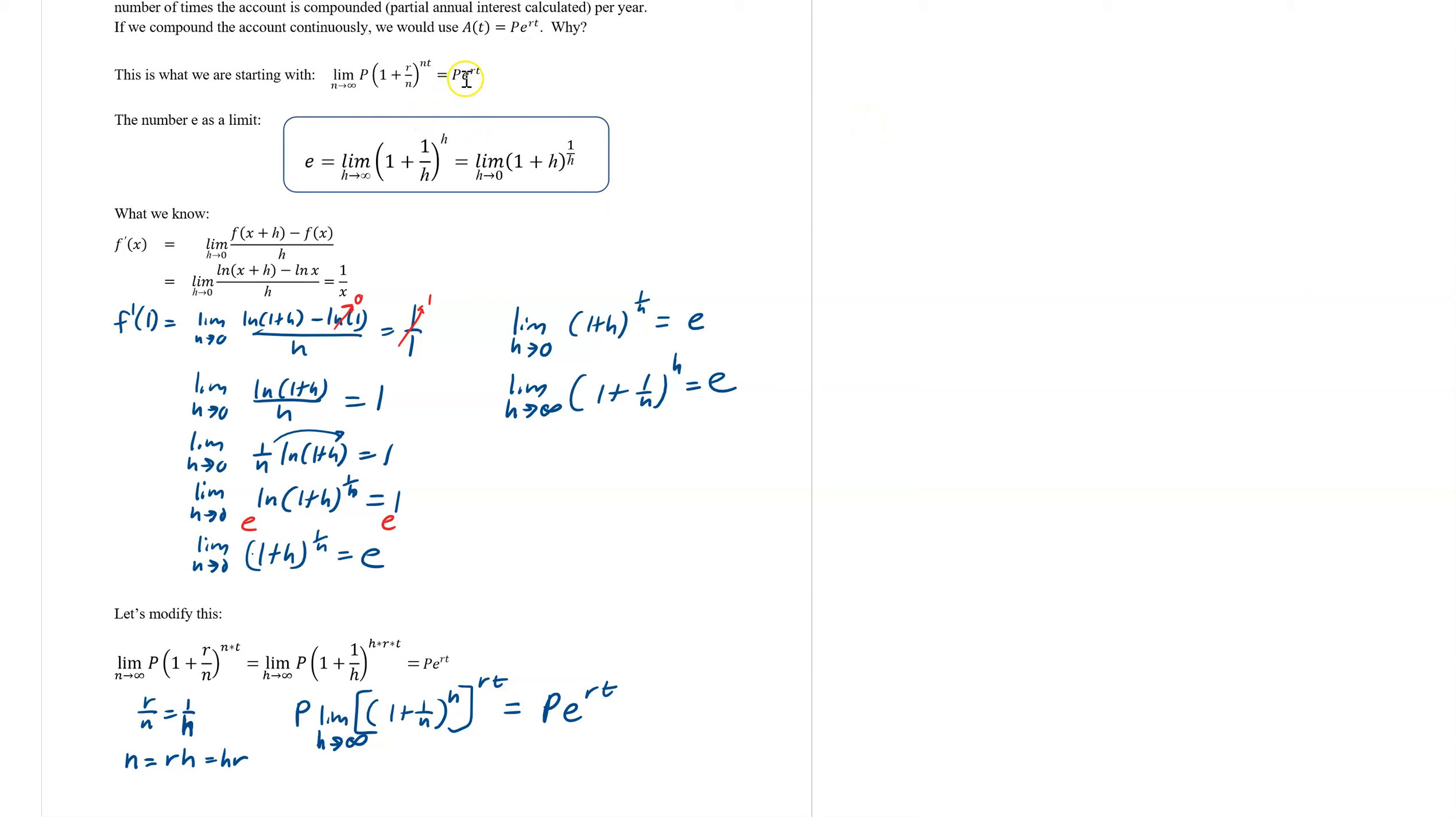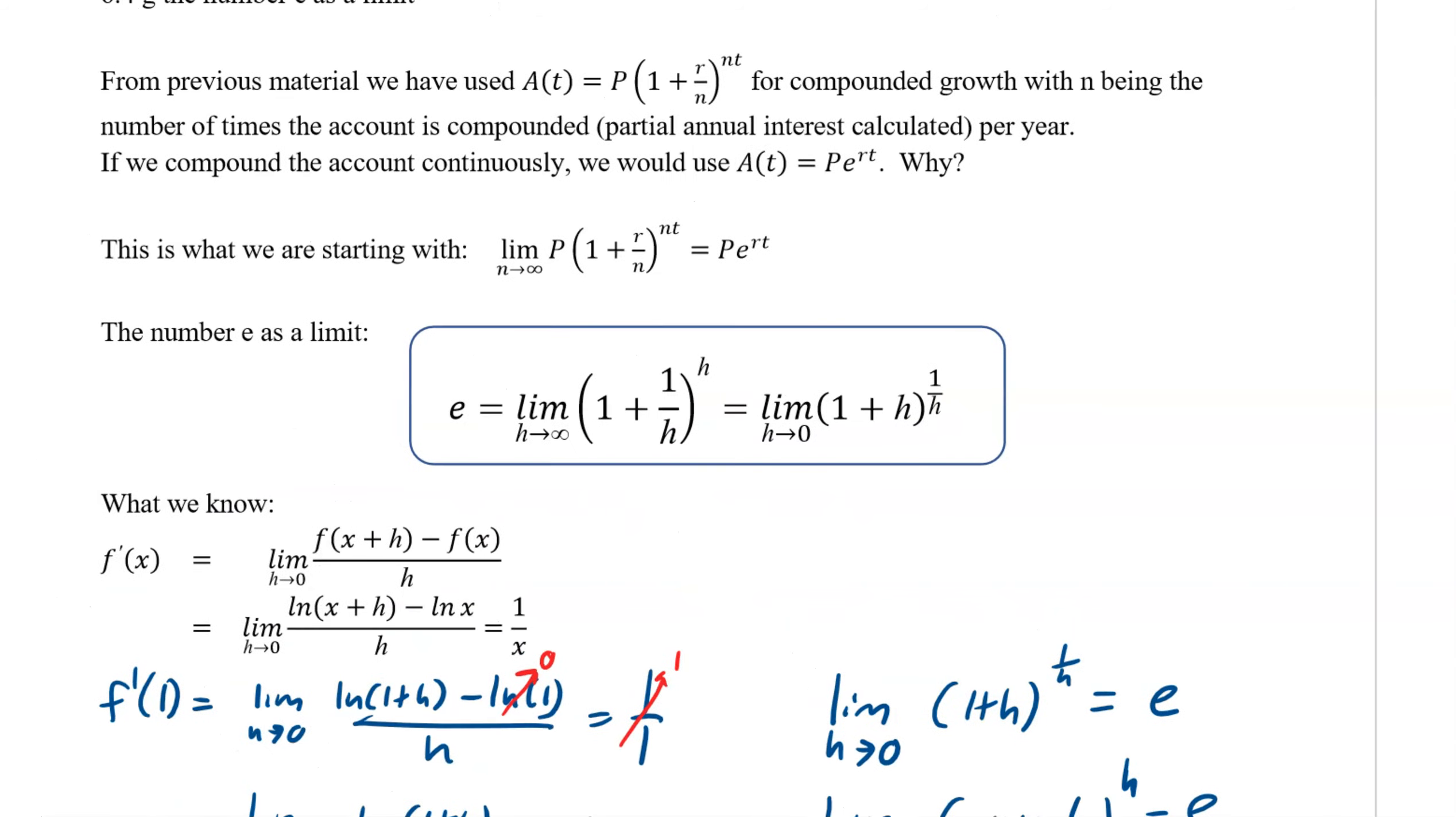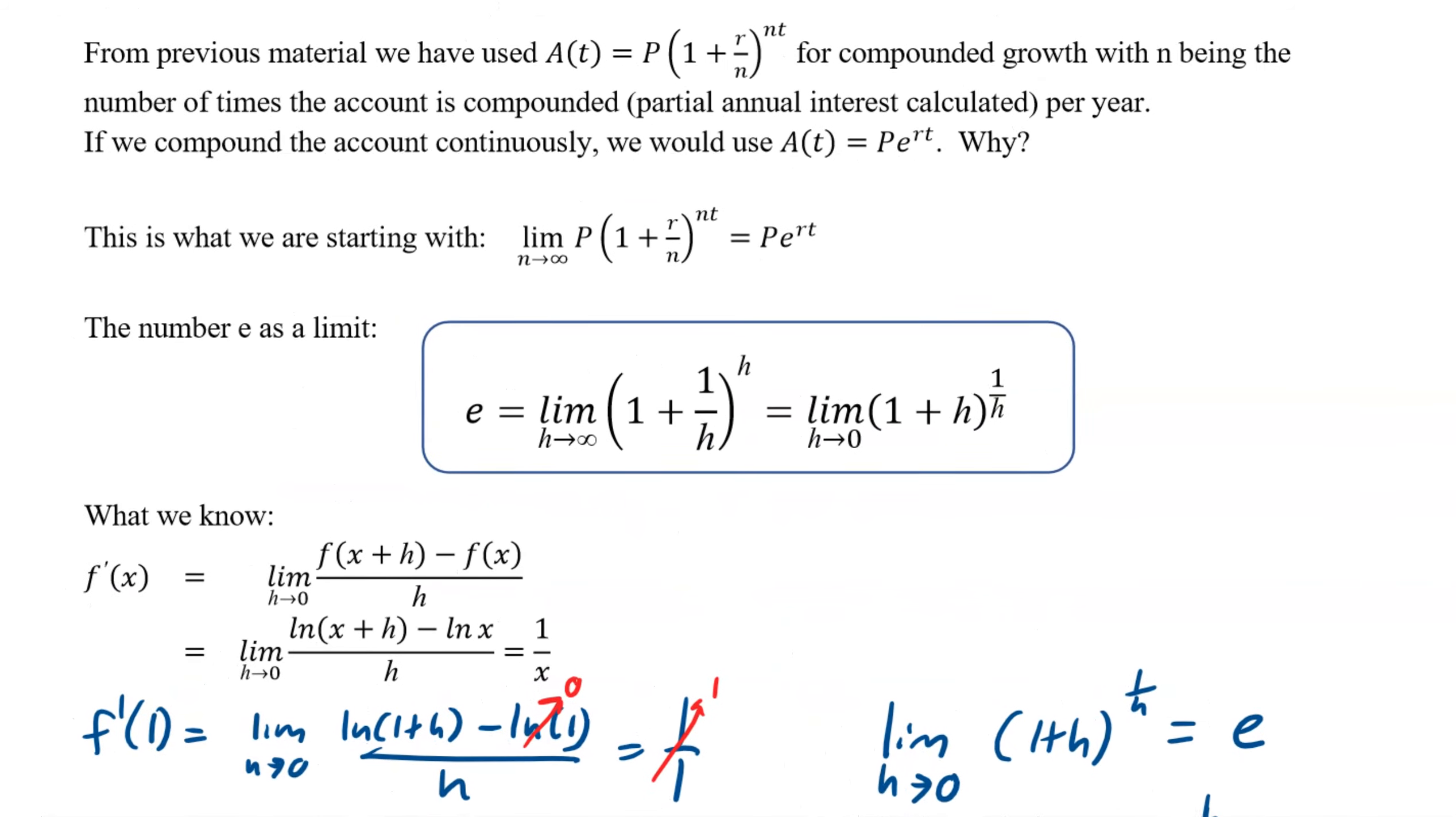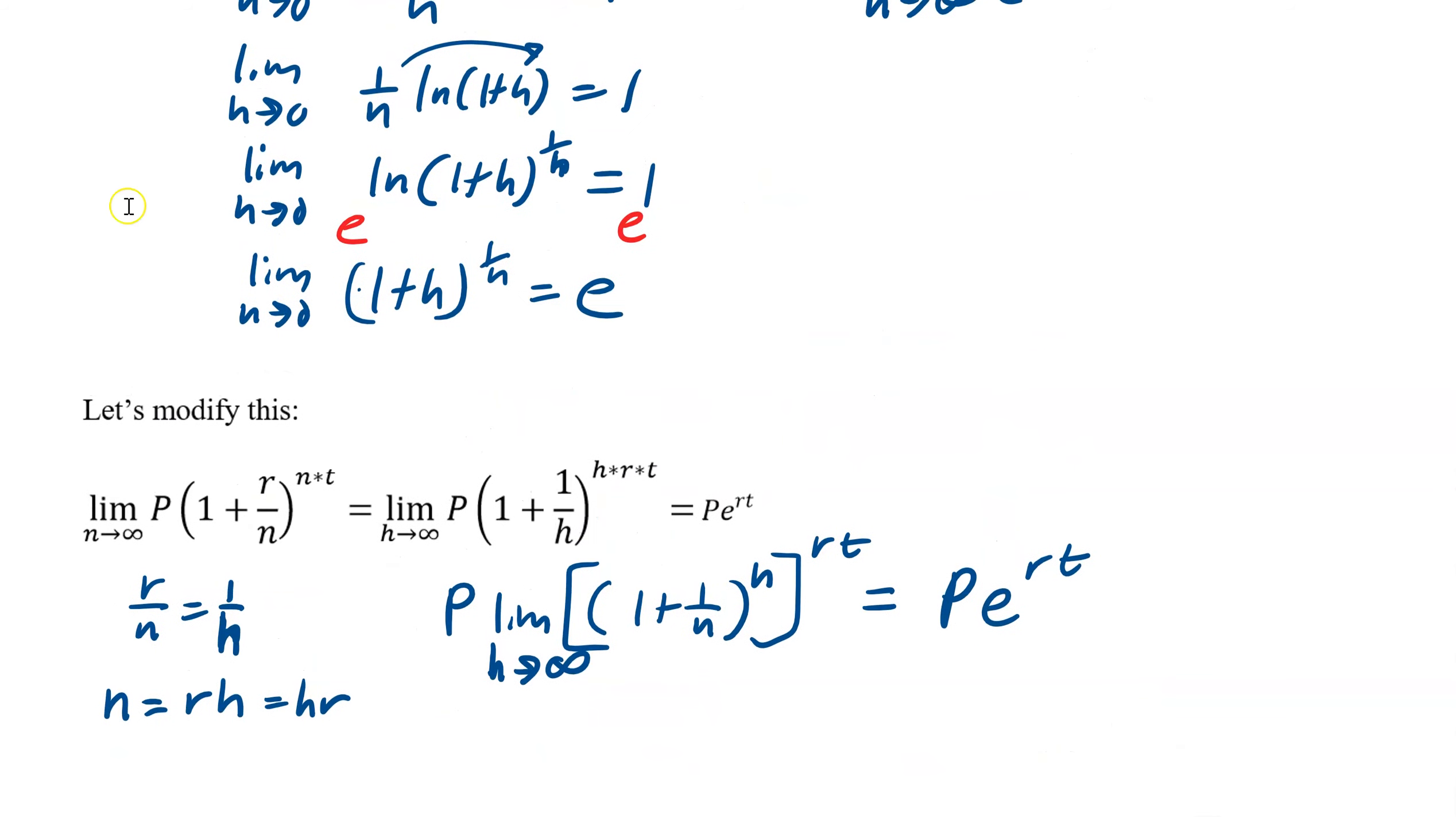All right. So now we're going to be using this compounded growth formula in a problem in the next video to talk about money, the most important thing in the world, right? It gets us everything we want. Not really, but it gets us a lot of things that we want. All right.